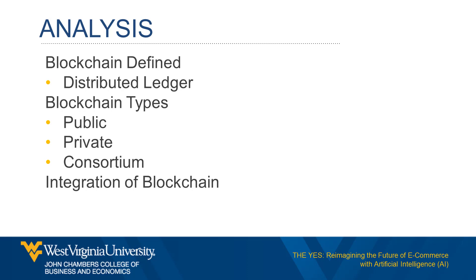Examples of public blockchains include Bitcoin and Ethereum. Private blockchains are permissioned, which means that a single organization controls access to read and write information. Because private blockchains have a limited number of participants and a centralized verification process, transaction processing speed is much faster than public blockchains, but at the expense of transparency and security. Private blockchains are often used in enterprise settings.